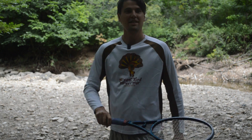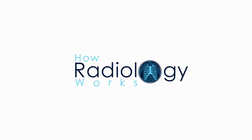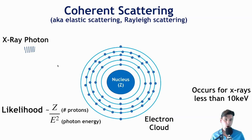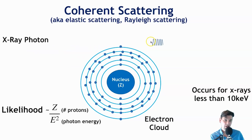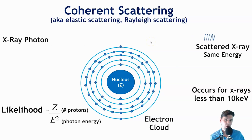Coherent scattering is one of the three interactions that can take place with diagnostic x-rays and the body. We have separate videos about Compton scattering and photoelectric effect — those are the dominant interactions — but for completeness we have this on coherent scattering. At a high level, the x-ray photon comes in, interacts with our electron cloud, scatters out, and has the same energy as when it came in.